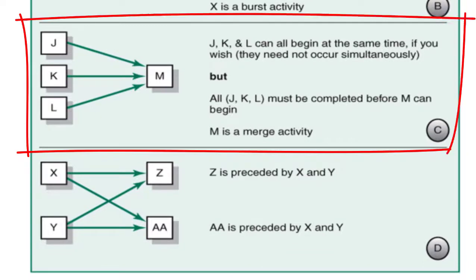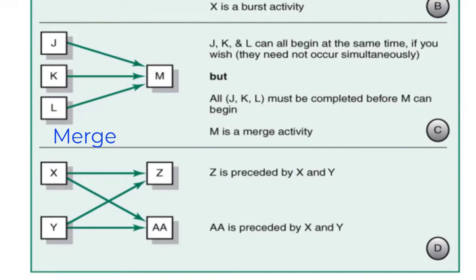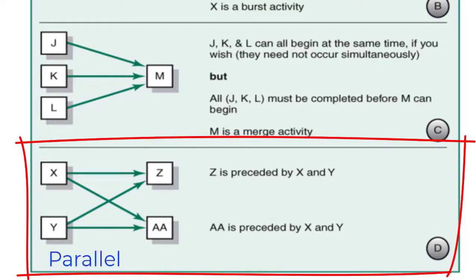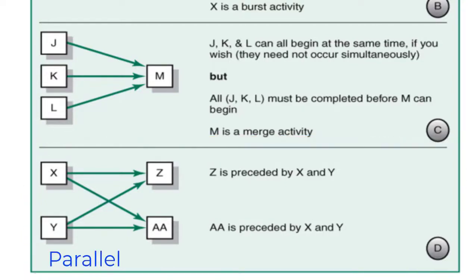C represents a merge activity. J, K and L can all begin at the same time if you wish, but they need not occur simultaneously. But all of J, K and L must be completed before M can begin, so M is a merge activity, with J, K and L merging into M. And D shows parallel relationships: Z is preceded by X and Y, and AA is preceded by X and Y.